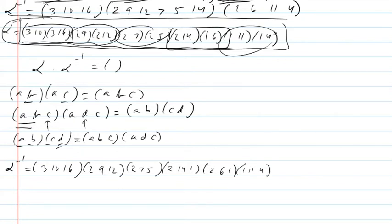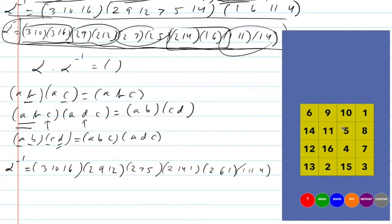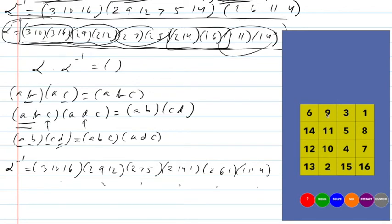In theory, this should work. Let's see if this sequence of 6 moves actually works — I'll do it carefully. Position 3 goes to position 10, goes to position 16. The thing in position 2 goes to position 9, goes to position 12.